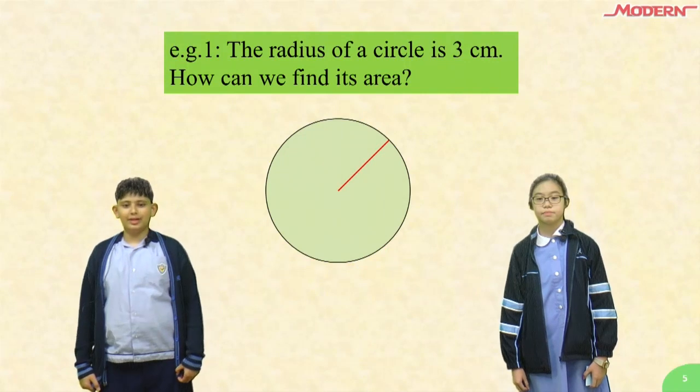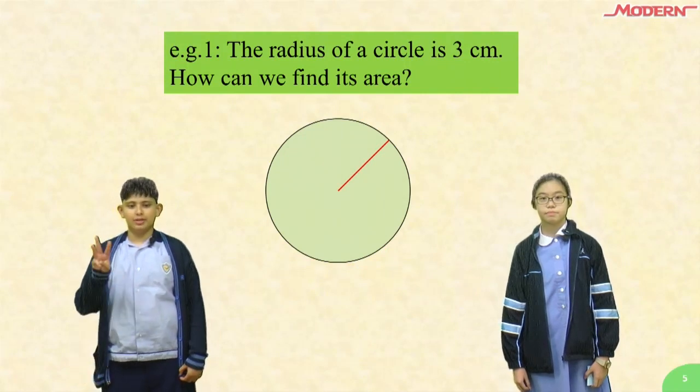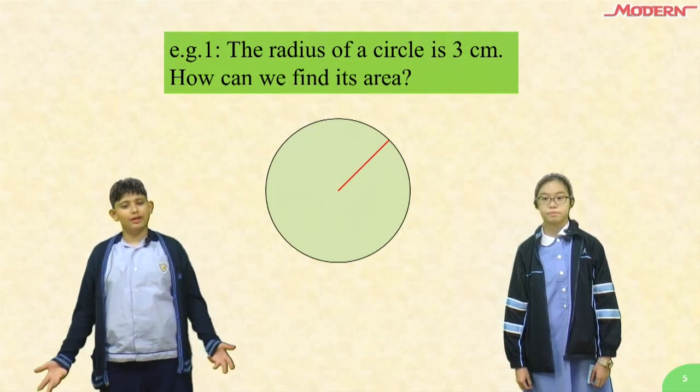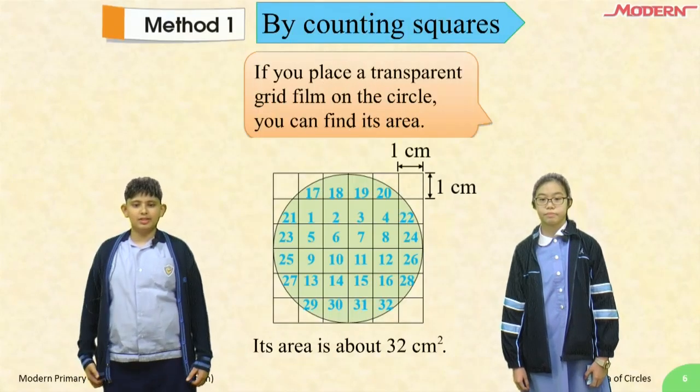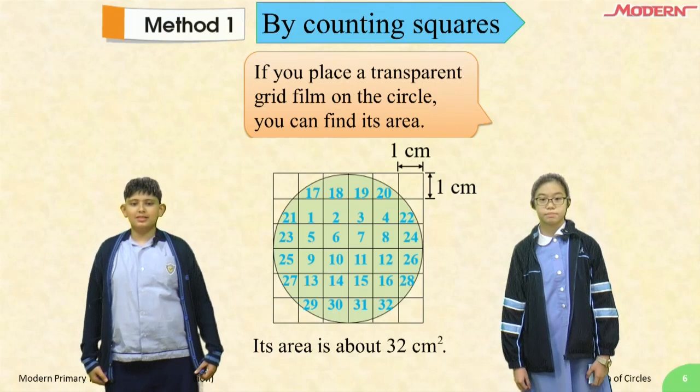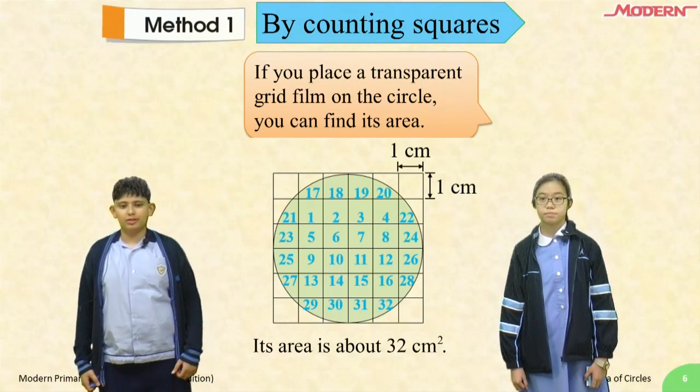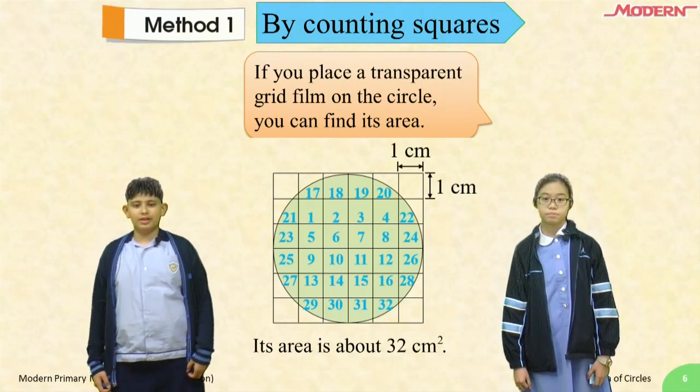Example 1, the radius of a circle is 3 cm. How can we find its area? Method 1, by counting squares. If you place a transparent grid film on the circle, you can find its area.